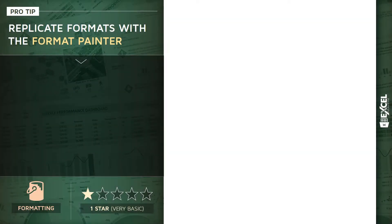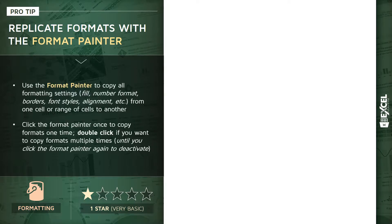The next pro tip is one of my favorites: replicating formats with the Format Painter. This is a one-star tip — very basic, very simple, but also very powerful once you know it exists. Essentially, the Format Painter copies all of the formatting-related settings from a cell or selected range of cells, including the fill color, the font, the number format, the borders, the styles, and the alignment.